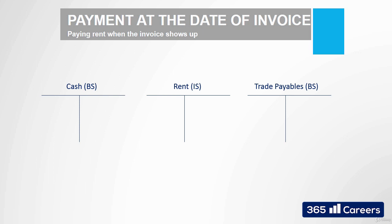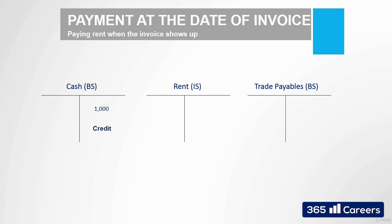Let's consider the first scenario when the payment and the expense recognition occur at the same time. We will pay $1,000 for rent. Our cash will decrease by $1,000, and because it is an asset, we'll have to credit it for $1,000. Then we'll debit Rent for $1,000, because it is an expense and it increases.